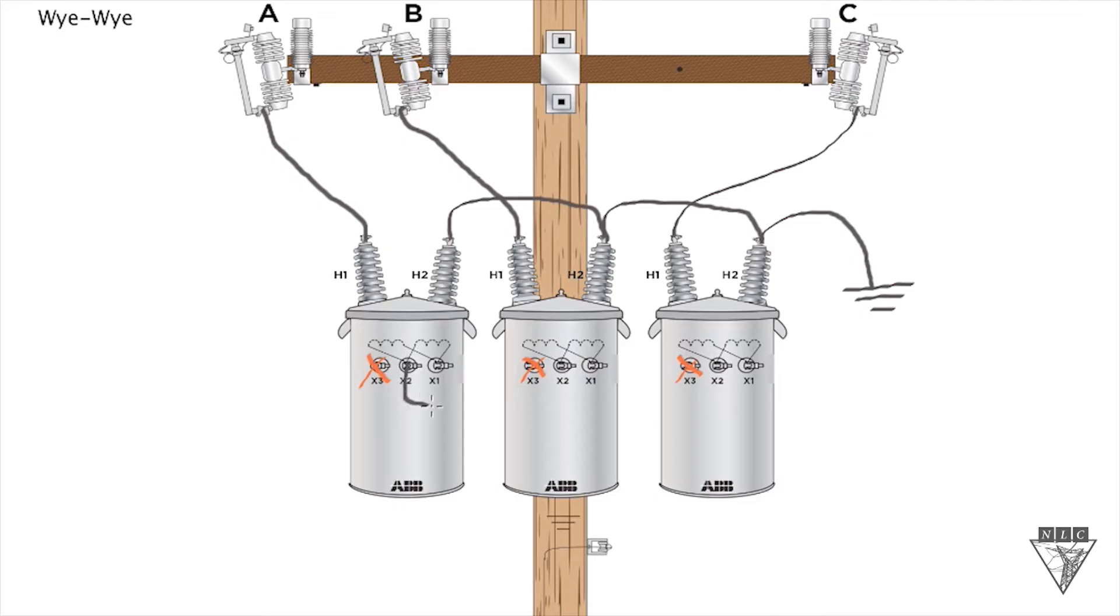So let's do the secondary connection now. The first thing we want to do is tie our X2 bushings together, make that so it's actually connected, and then tie it to ground. And that's our neutral on the secondary side. X2 bushings are all tied together and then tied to ground.